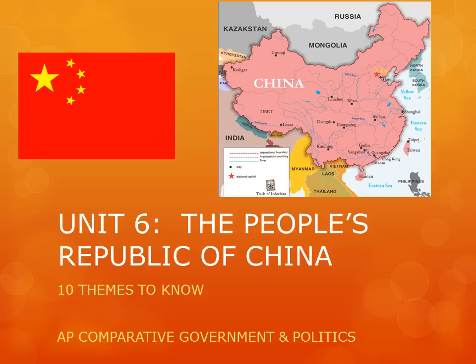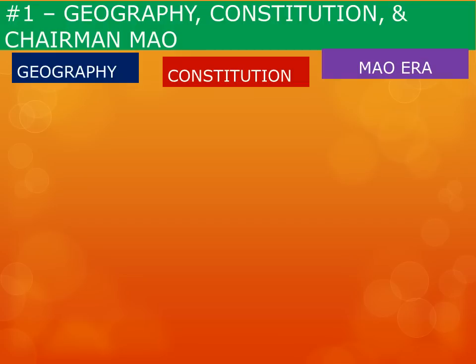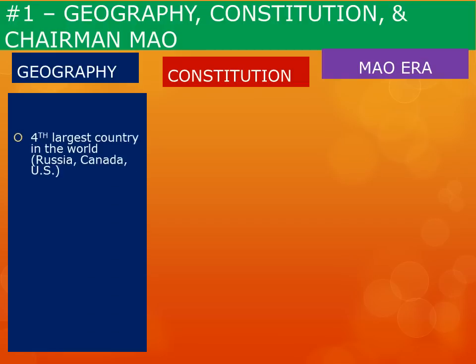Ten themes to note for the unit test on the People's Republic of China, Unit 6 of AP Comparative Government. First up: geography, the constitution, and the reign of Chairman Mao.